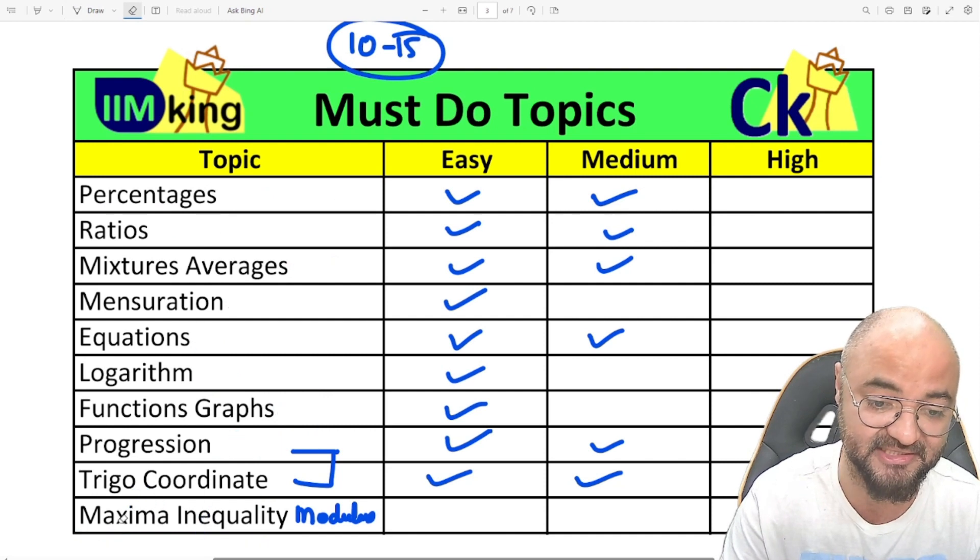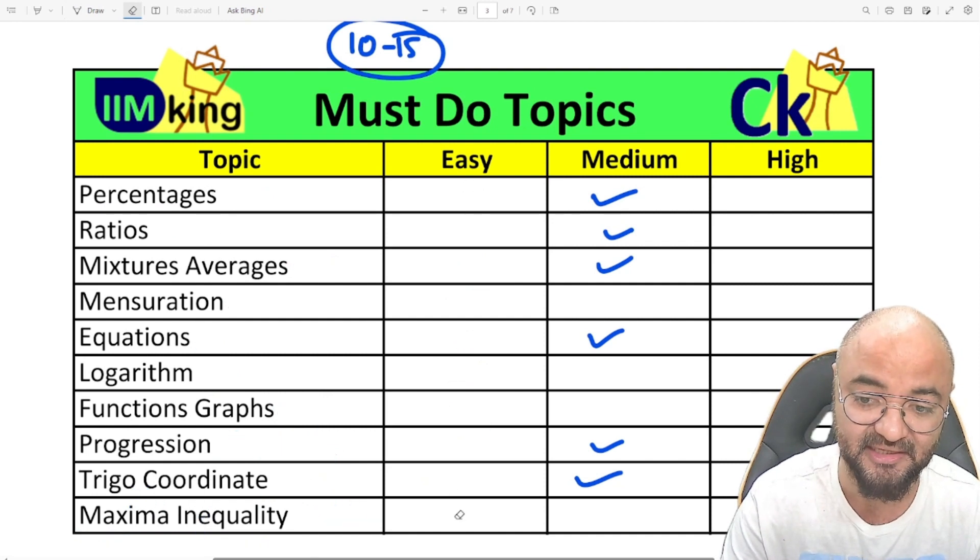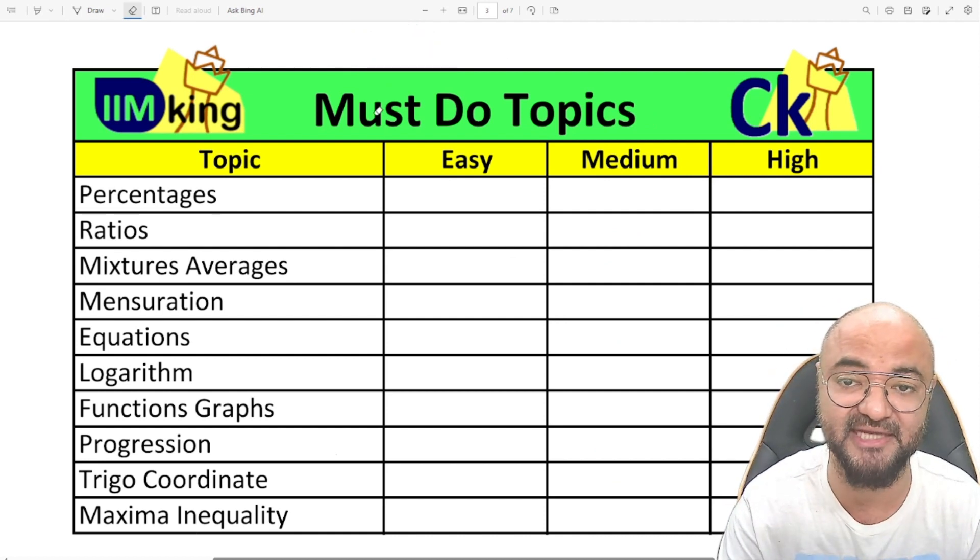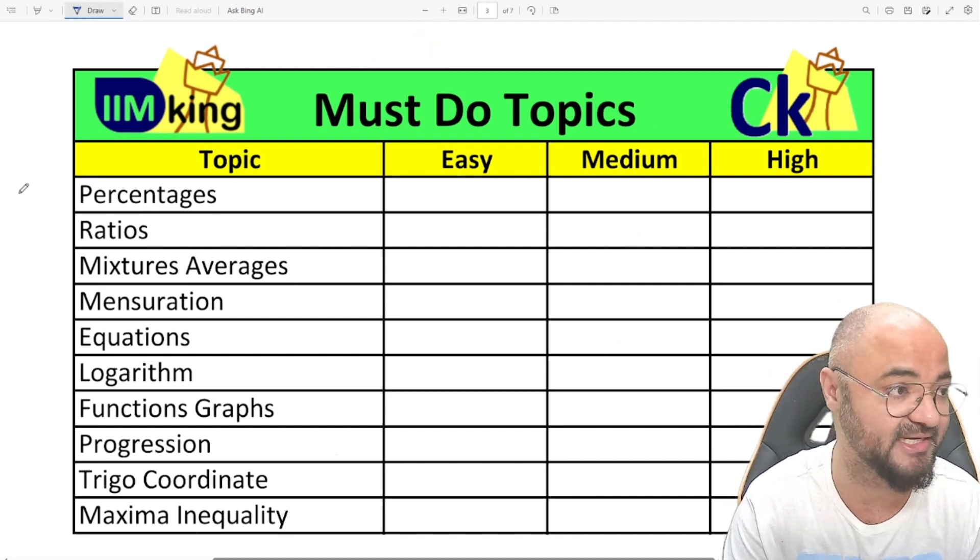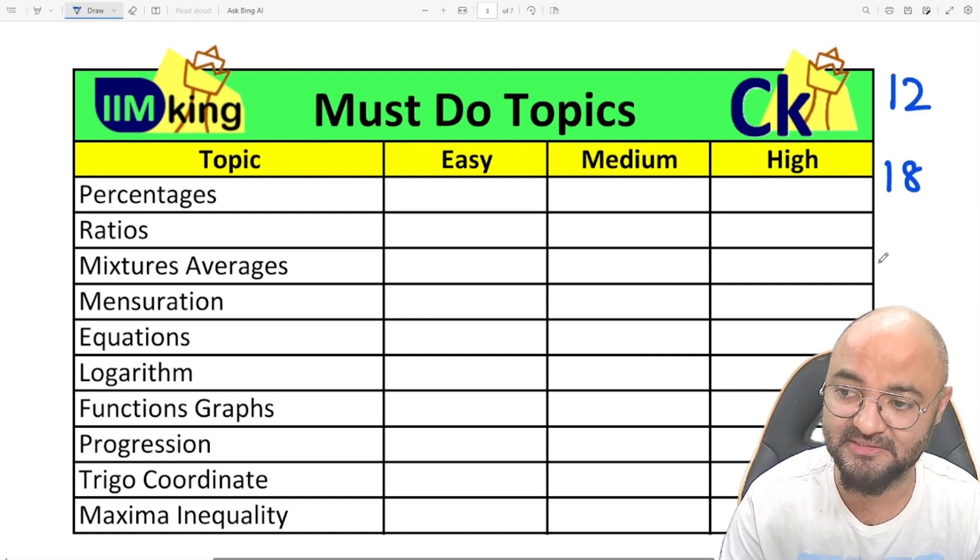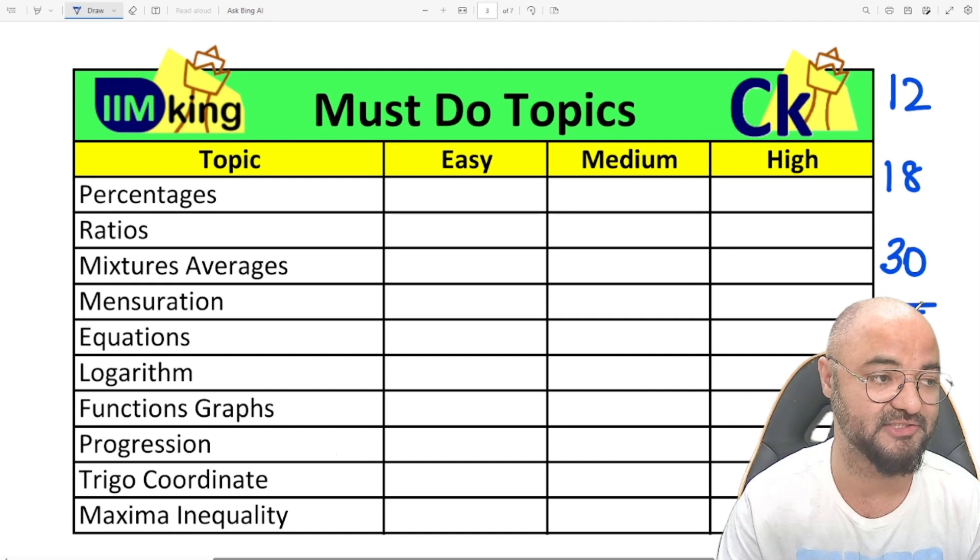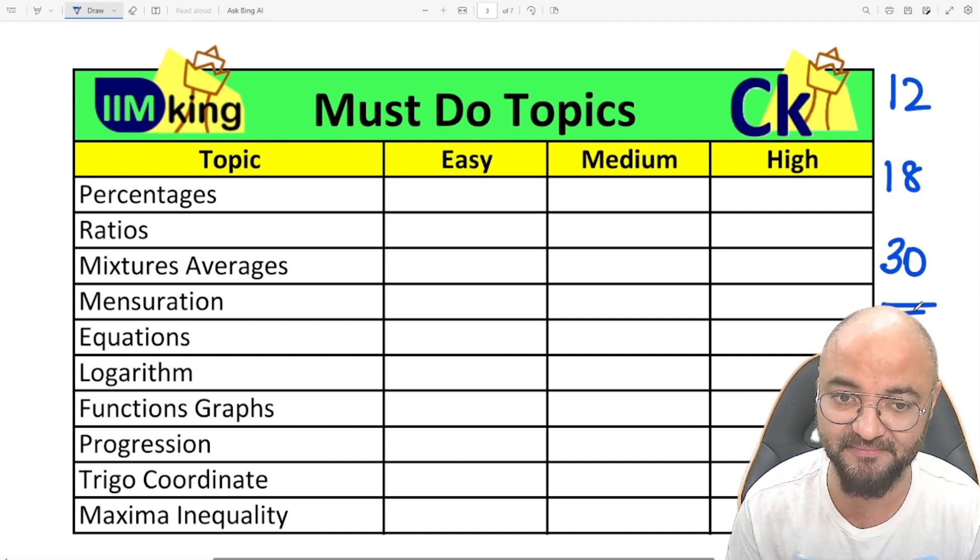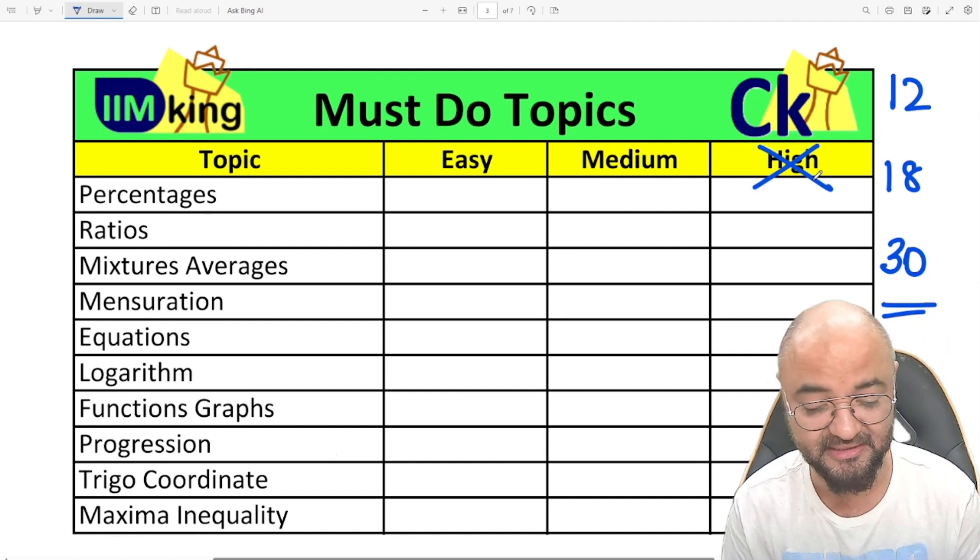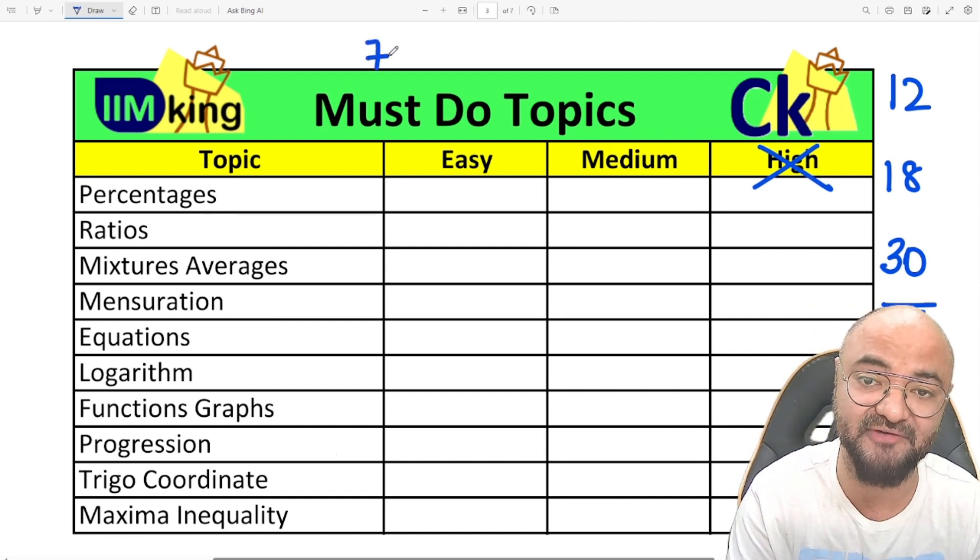These are the topics which you have to do in the next 50 days so that I can achieve my target of 12 marks, 18 marks, or 30 marks. We'll step by step grow in the game. You don't need to do very high level questions because in the CAT paper there will be around seven questions which are dedicated—like pure logarithm questions—and their level is going to be very high.